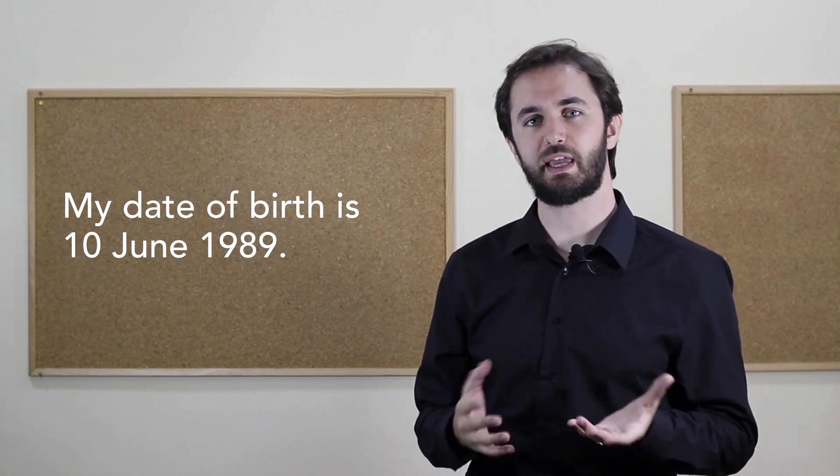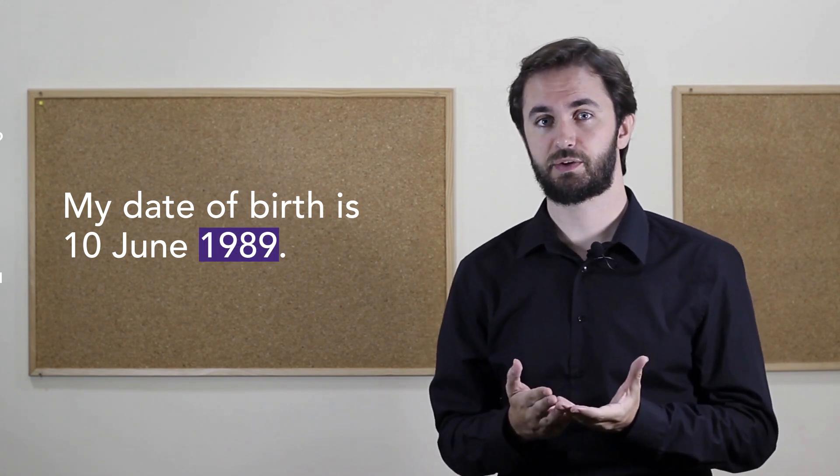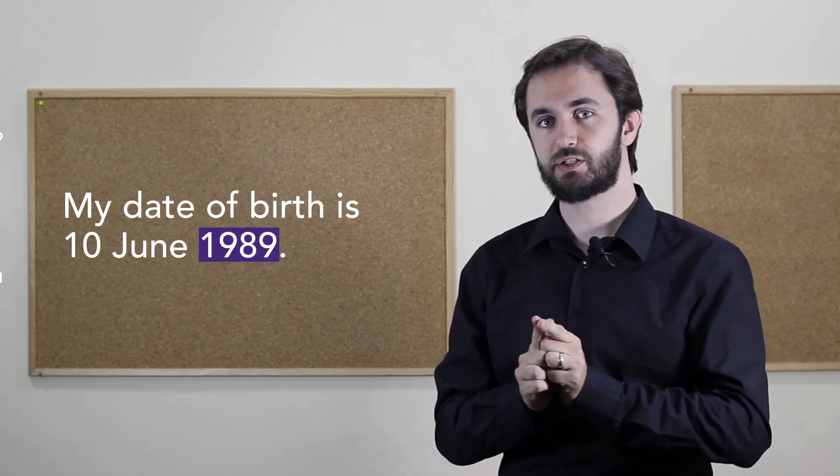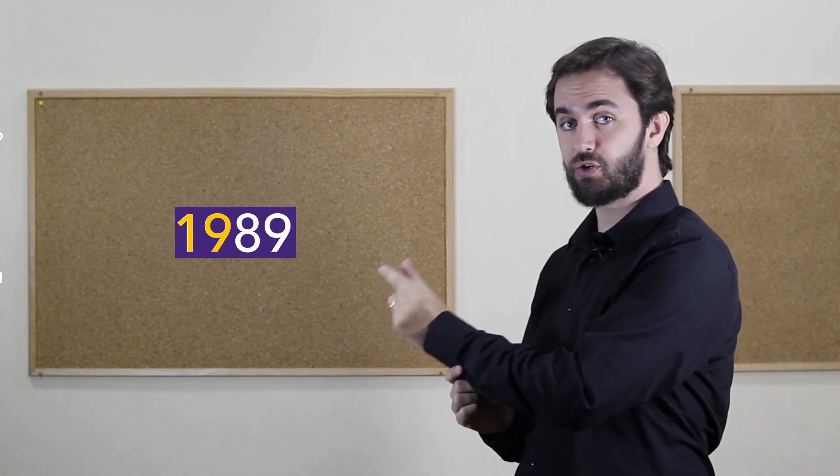How do we say years in English? To say years, we usually say the first two numbers, then the next two numbers. 1989. 1989.